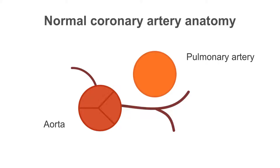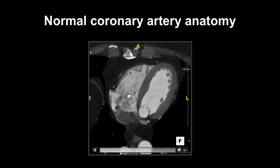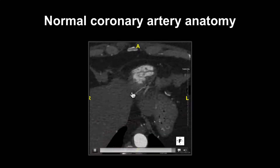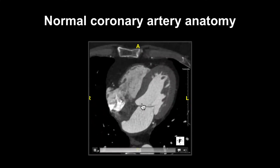Before we look at further examples of congenital coronary anomalies, let us first review the normal coronary anatomy. The left main stem should normally arise from the left coronary cusp before bifurcating into the left anterior descending artery and the left circumflex artery. The right coronary artery should normally arise from the right coronary cusp and pass anteriorly down the right-sided atrioventricular groove. Any deviations from this normal arrangement constitute a coronary anomaly. Pay attention to where the right coronary artery emerges from the right coronary cusp and where the left main stem emerges from the left coronary cusp.